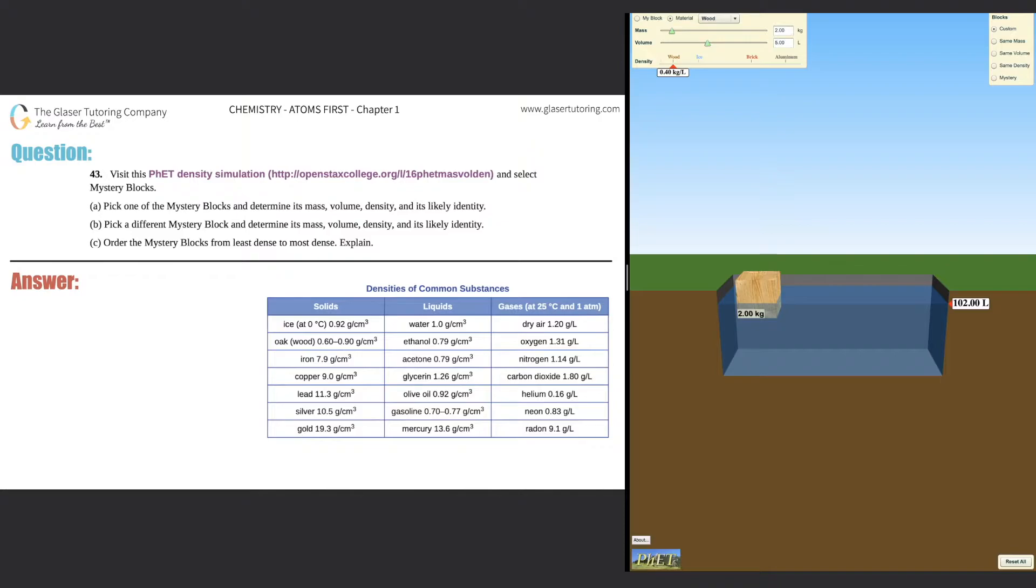Number 43. Visit this PHET density simulation, which is this website right here, and select mystery blocks. And then they want us to do A, B, and C. So first things first, I'm just going to list A, B, and put C over here.